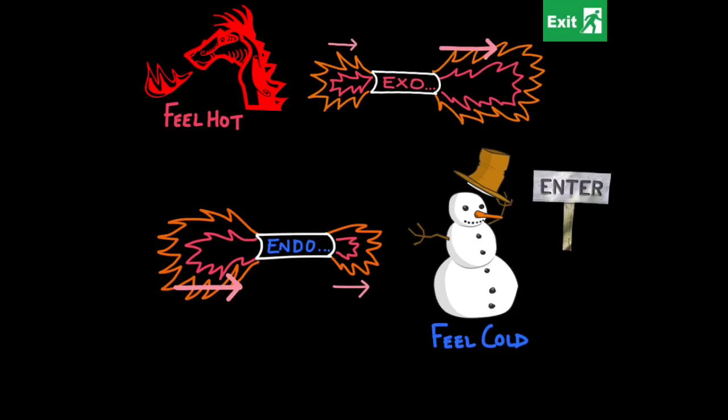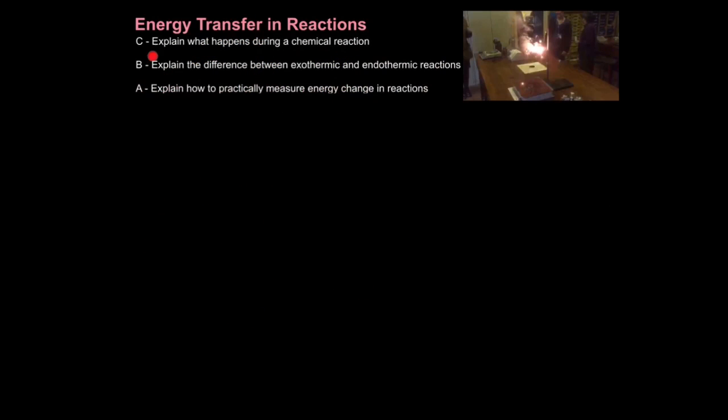By contrast, some reactions require a lot of energy to get them going to break those bonds in the reactants, but release less energy when they form the products. These are called endothermic reactions and they feel cold and bring about a drop in temperature. Think of endo for enter because we need more energy input into the system. That's how you explain what happens during a chemical reaction.